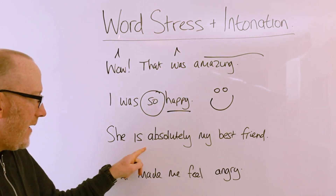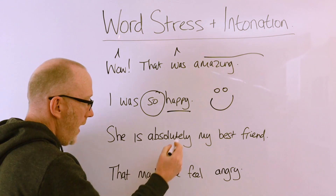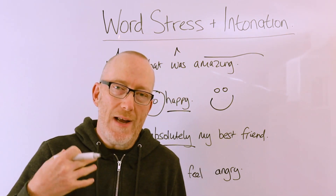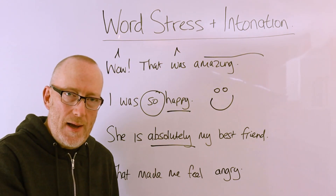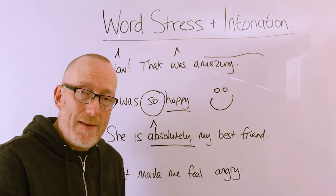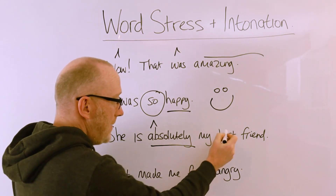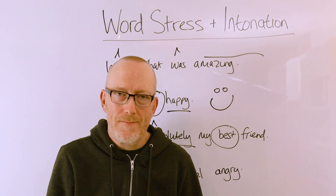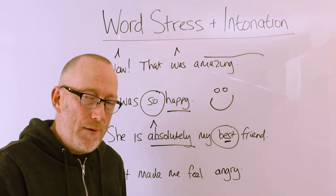Here's another example: 'She is absolutely my best friend.' Here we have the adverb 'absolutely.' Whenever you want to use an adverb to add extra emphasis to something, you want to stress this word. We're going to add extra stress on the initial syllable — 'ABsolutely.' 'She is absolutely my best friend.' And for 'best,' a bit like 'so,' you want to stretch it. 'She is my BEST friend' — stretch the E and S sound in 'best.'